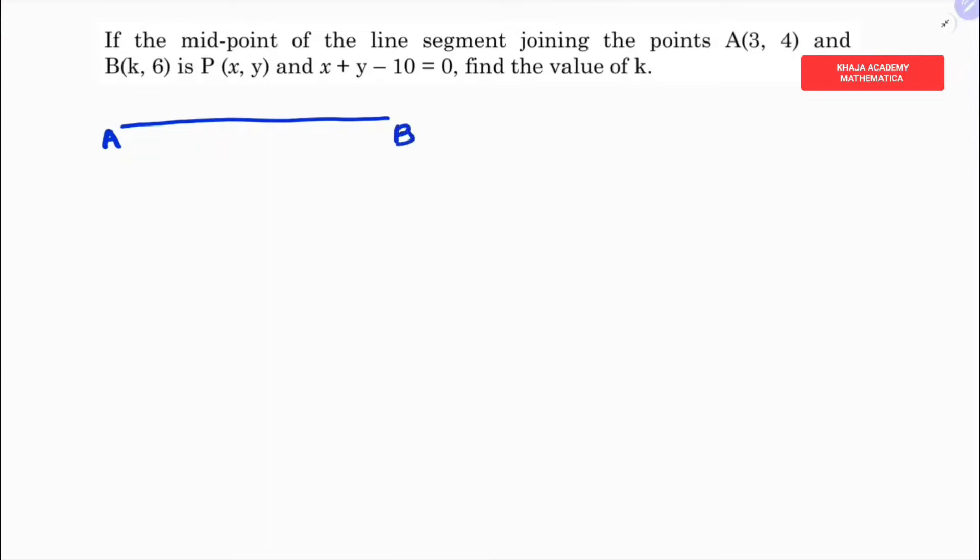Here A is (3, 4), B is (k, 6), and the midpoint P is (x, y), where x + y - 10 = 0.